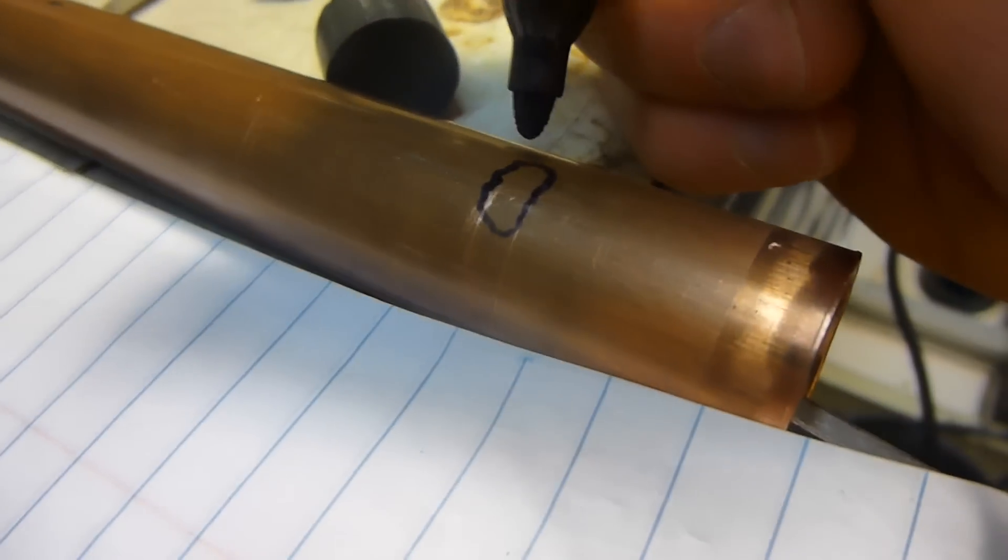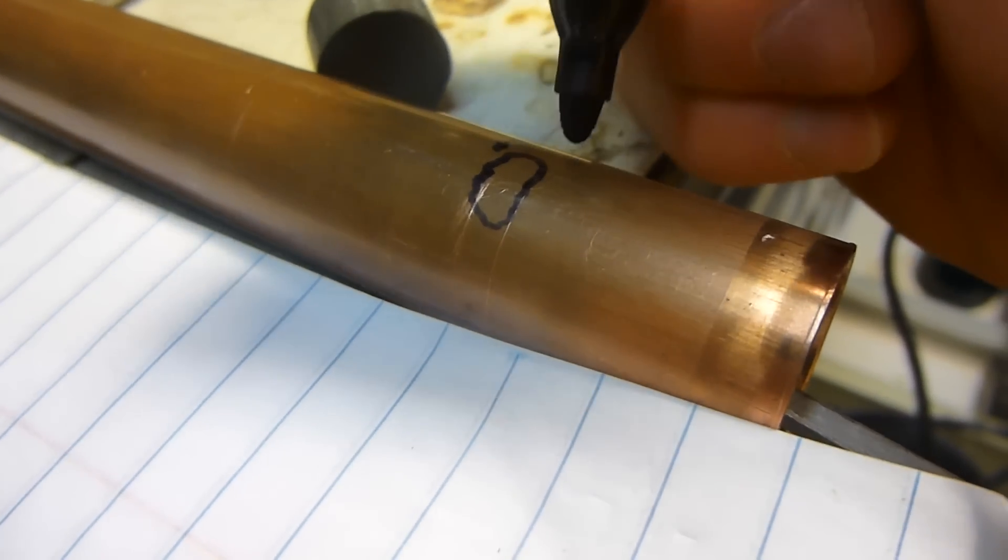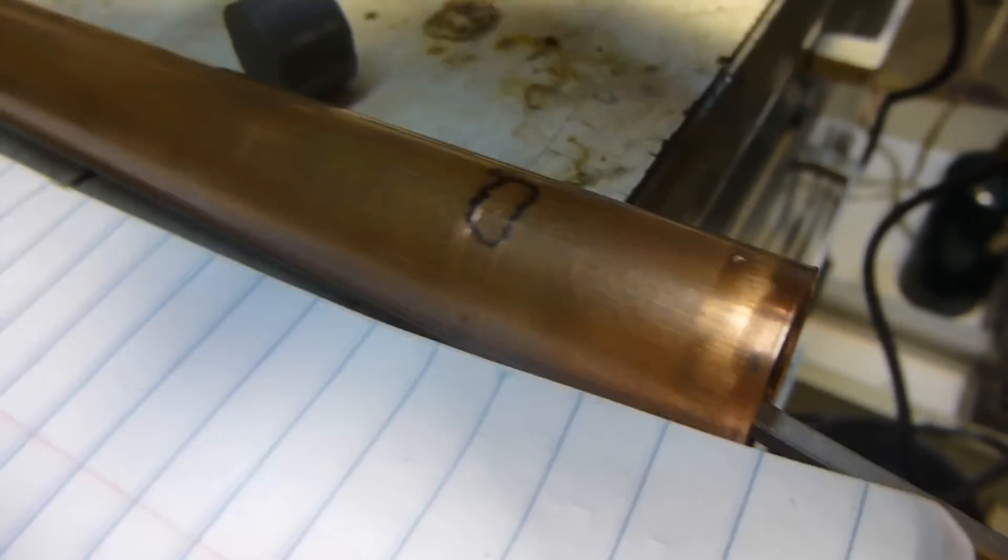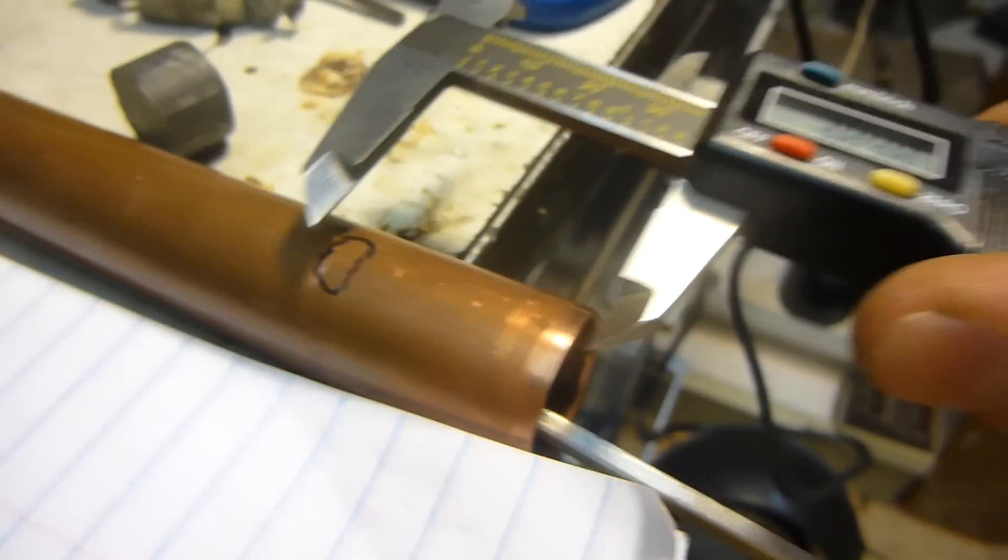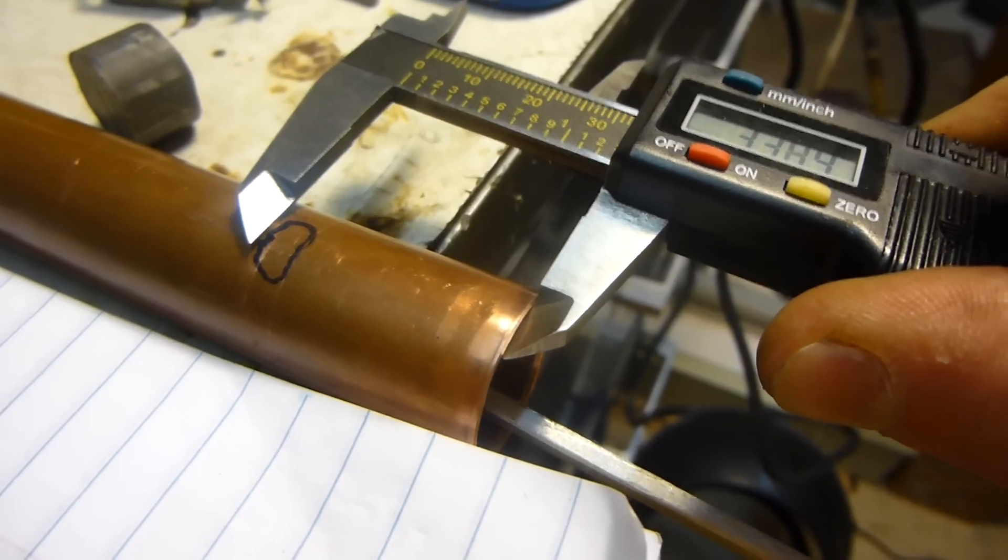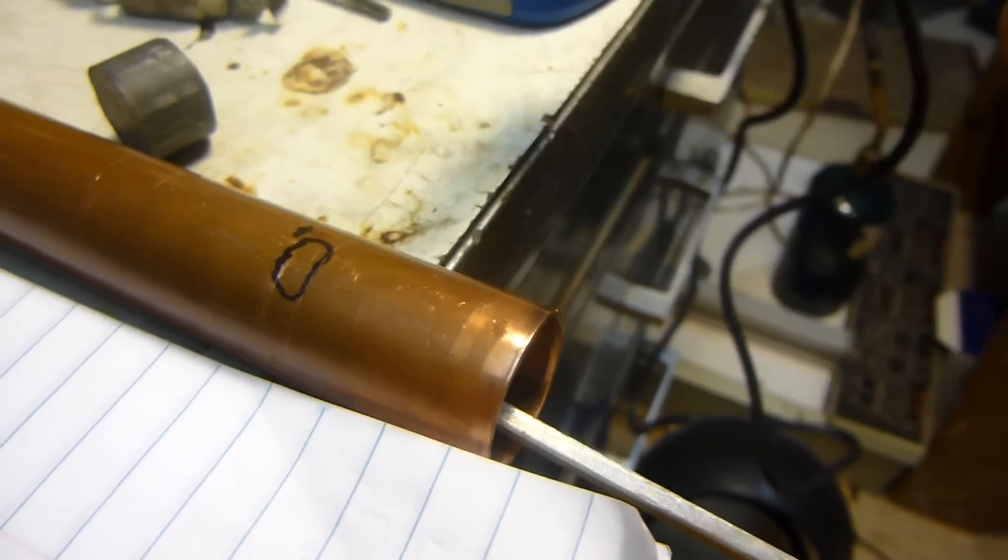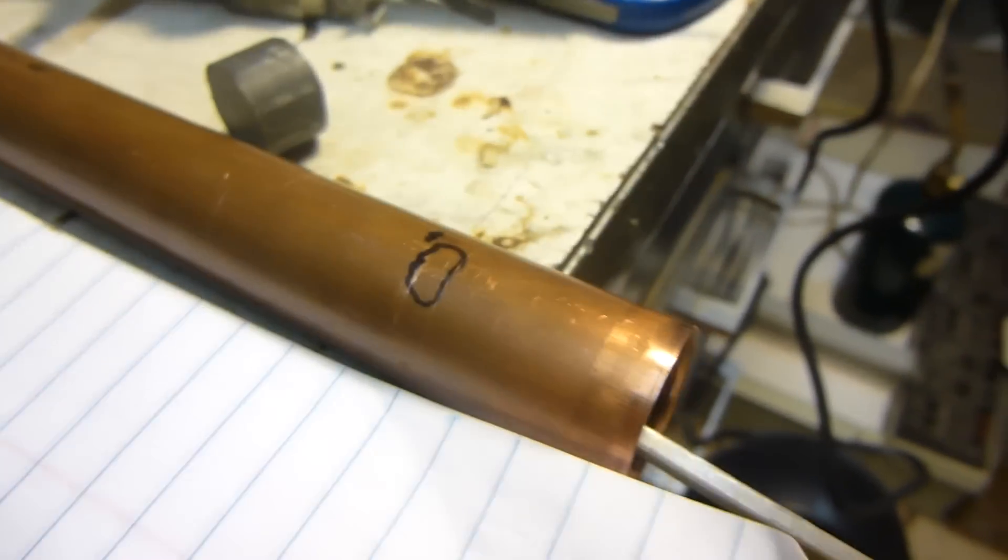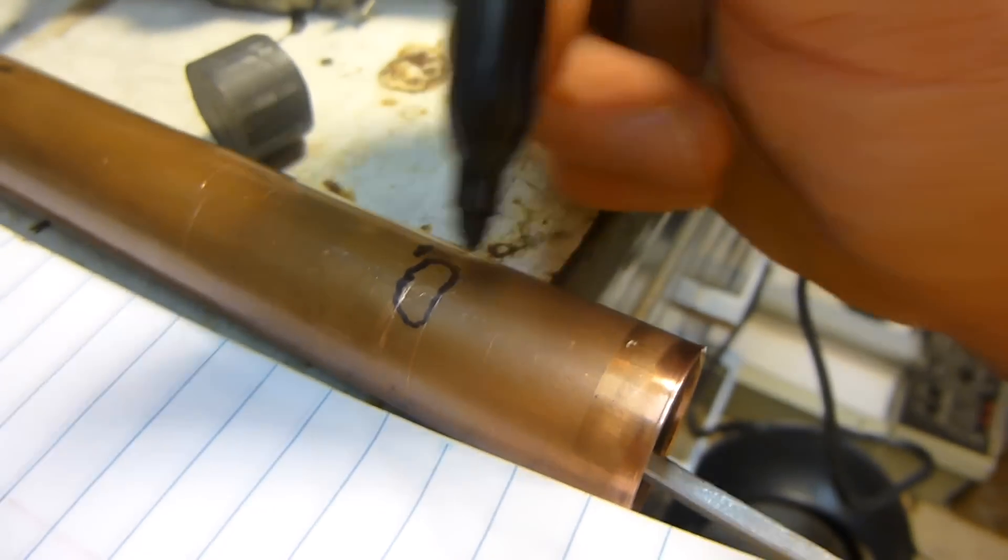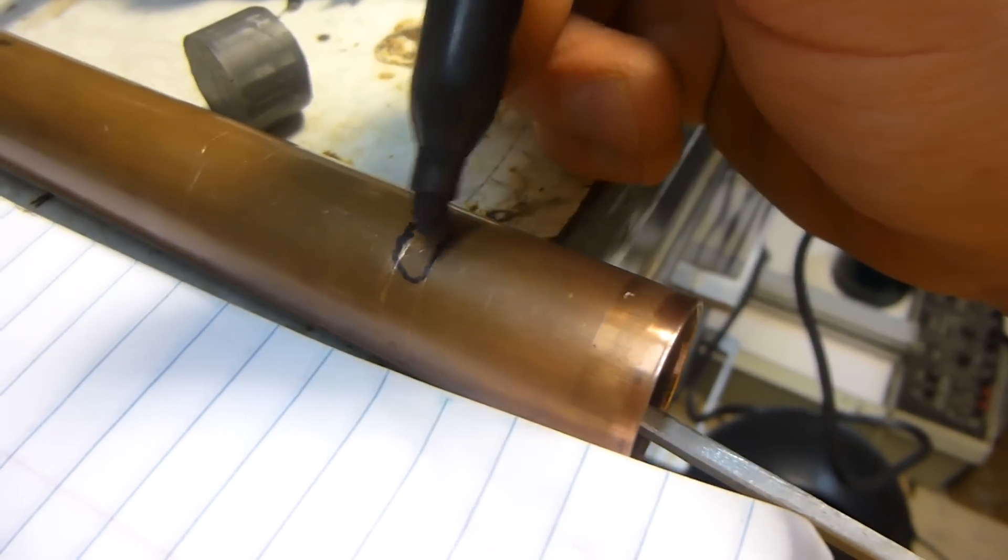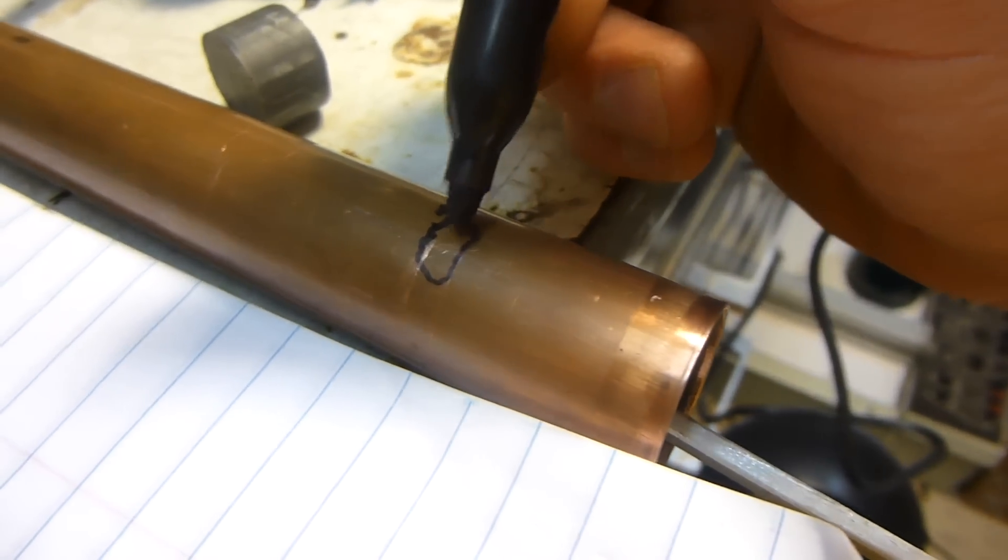So the piston actually needs to come back to like here to clear that. That's about 32 millimeters. Yeah, about 32 millimeters it needs to come back there. So that means my piston needs to be 32 millimeters tall so that when it's all the way down, the exhaust port doesn't expose the combustible gases.